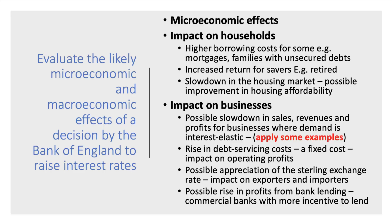What can you talk about in terms of knowledge of the full syllabus on the micro side? The obvious thing is to think about the possible consequences on individual households at a micro level, and individual businesses and markets. In terms of households, one effect could be higher costs of borrowing — perhaps their mortgage becomes more expensive. Families with unsecured debt, perhaps with high credit card or store card debt, would face an increase in borrowing costs. On the other hand, savers — maybe retired households who depend on their savings — might see the rate of return on savings improve, giving them higher disposable income. Another micro aspect would be the possible impact on the housing market, perhaps a slowdown in the rate of growth of prices, which could impact housing affordability for first-time buyers.